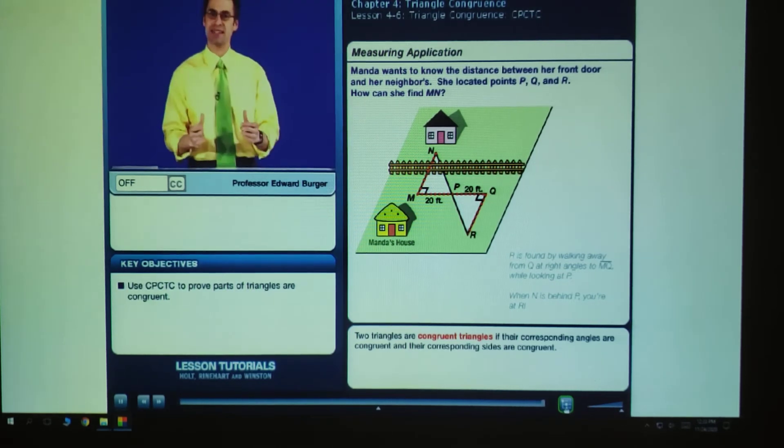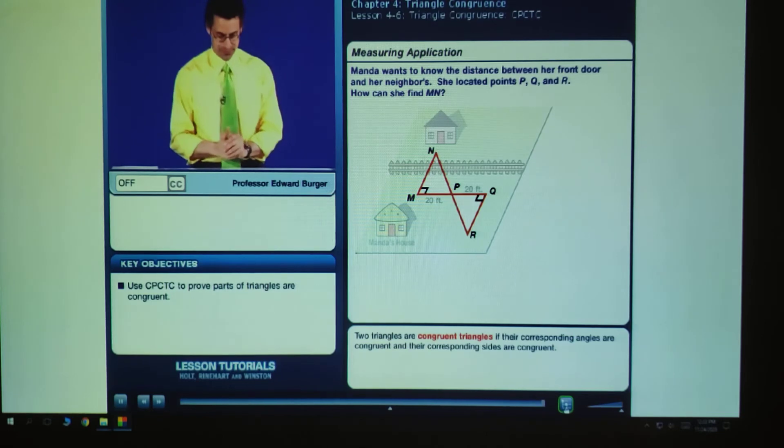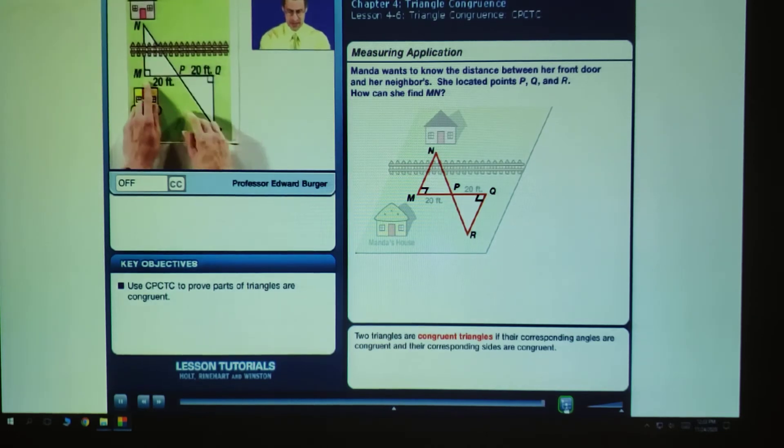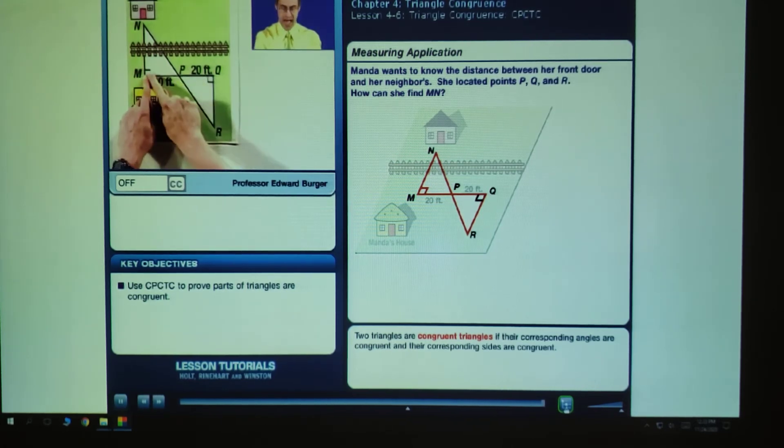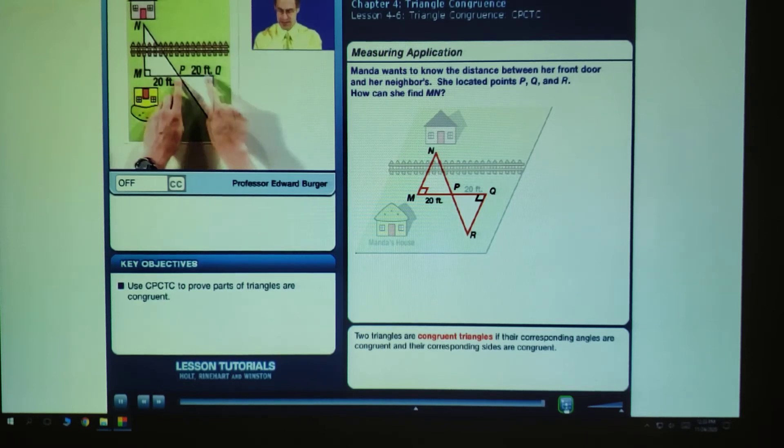The really cool answer is yes, and geometry holds the key to unlock this challenge. Because look, check it out. What I see here is that this is a perfect right angle by how she constructed this side. So that is a 90 degree angle. This is 20 feet. This is 20 feet.